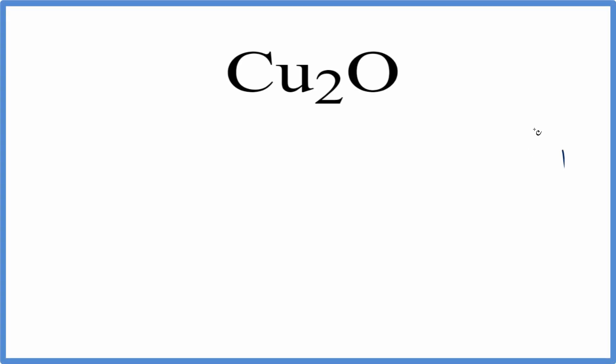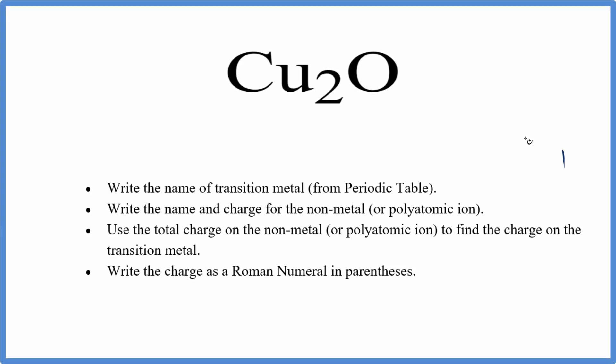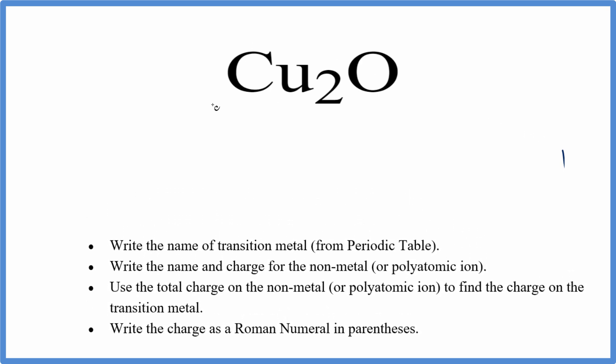To write the name for Cu2O, that's copper oxide, we use these rules in the periodic table. Cu on the periodic table is copper, and O is oxygen.